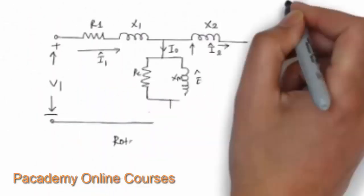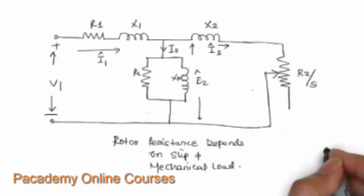The rotor resistance and reactance — the rotor impedance — have been transferred to the stator side. The transferred values are X2 and R2, and the circuit can now be written as a single circuit with current I2, where X2 is the rotor reactance and R2 is the rotor resistance, which is seen to vary with slip. As slip is high, the effective rotor resistance varies accordingly.